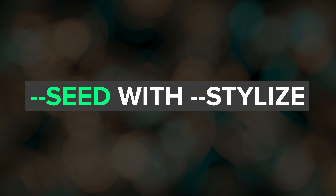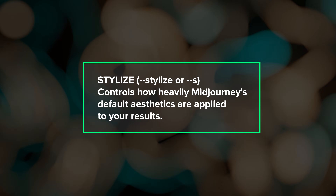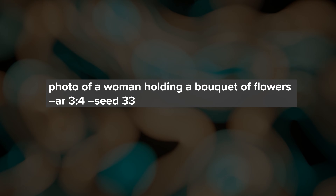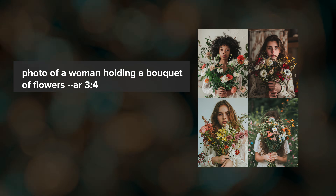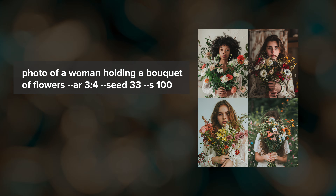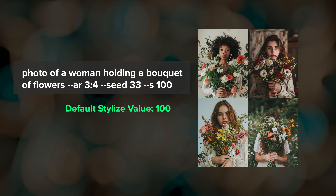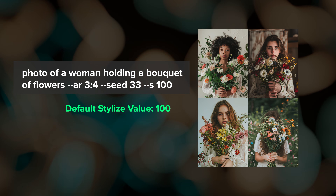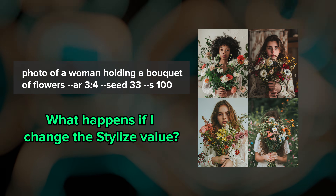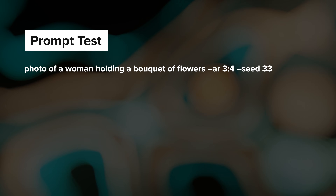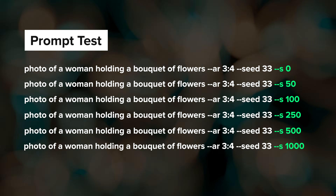Let's use the seed parameter to learn how stylize affects results. The stylize parameter controls how heavily Midjourney's default aesthetic is applied to your images. Here's my starting prompt — I chose to use seed 33. The number doesn't matter as long as we use the same one for each prompt in the test. Here's what the results look like with the default stylize value of 100. You can check your default values in your settings menu, but 100 is the common default. By keeping the same seed number, we ensure that each job starts with the same visual noise, letting us isolate the effect of changing the stylize value.